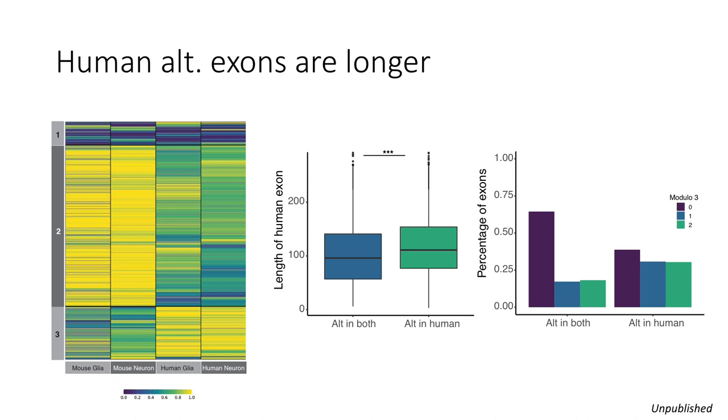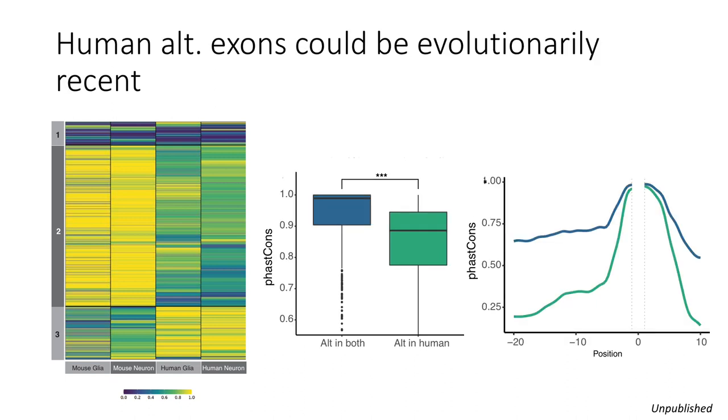So when we look at the exons that are alternative in human versus alternative in both, what we find is that they are generally longer and they also don't preserve the coding frame as often as the other ones do. And additionally what we find is that if you look at the PhastCons scores of the exons that are alternative in human, they are a little bit lower, meaning that they may be a little bit newer when it comes to evolution. And when you look at the region flanking that exon that is also true, so it just seems to be like these are newly formed sequences.